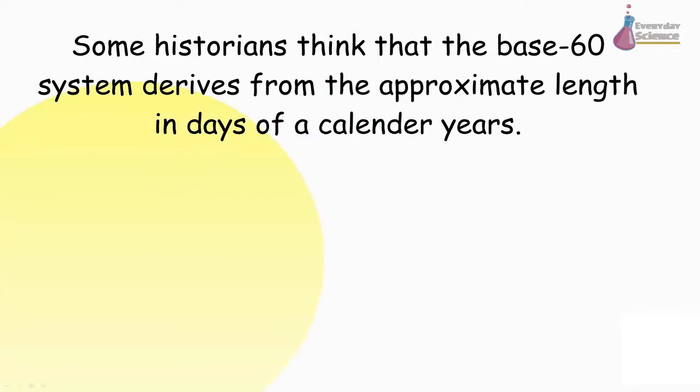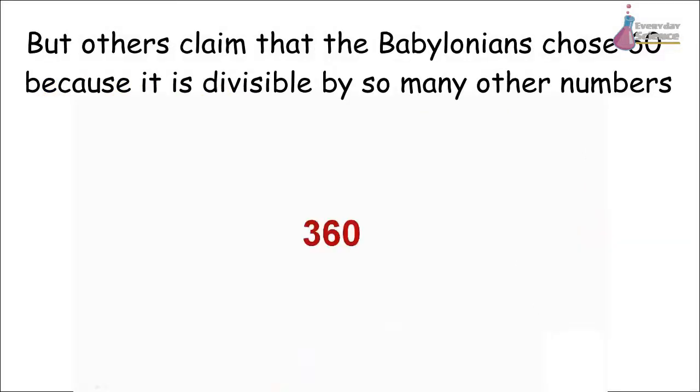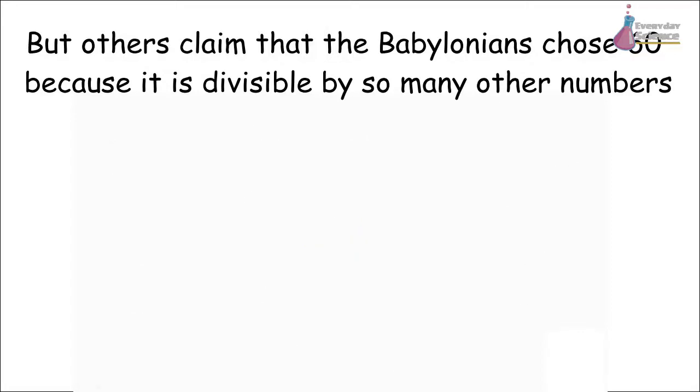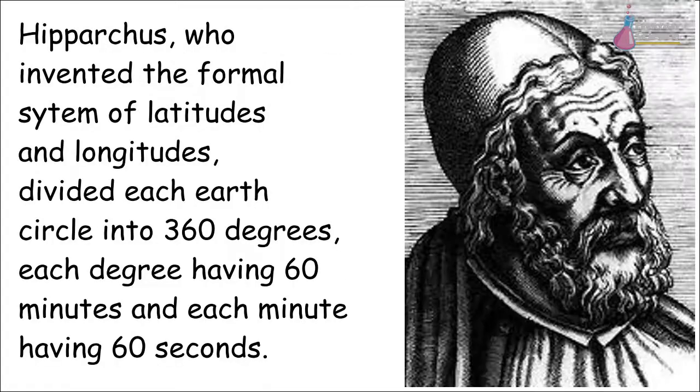Some historians think that the base 60 system derives from the approximate length in days of a calendar year, but others claim that the Babylonians chose 60 because it is divisible by so many other numbers.